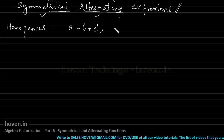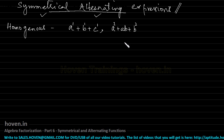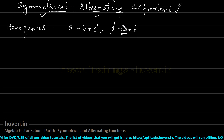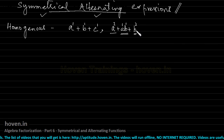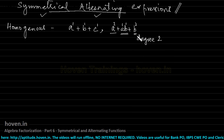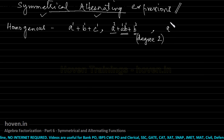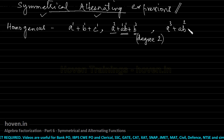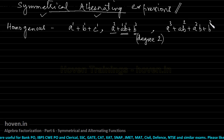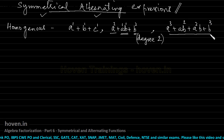Take another example: a squared plus ab plus b squared. This is also homogeneous because the degree of each term is 2 — a squared has degree 2, ab has degree 1+1=2, and b squared has degree 2. Therefore, this is a homogeneous expression in degree 2. Similarly, a cubed plus ab squared plus a squared b plus b cubed is a homogeneous expression in degree 3.